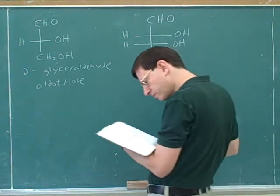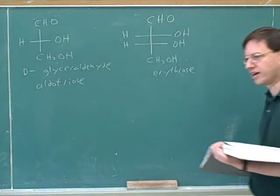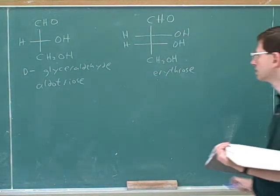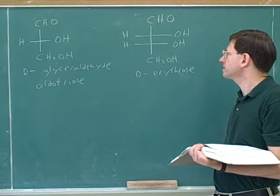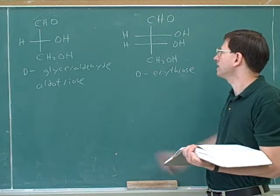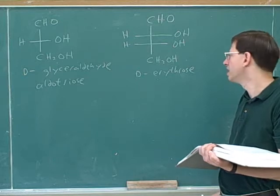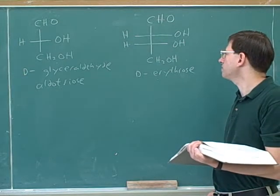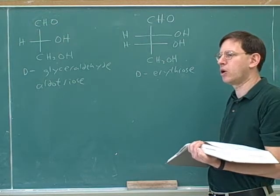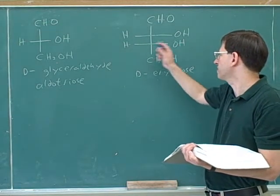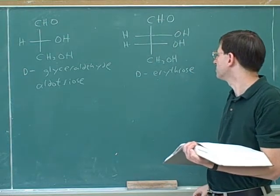This compound is called erythrose. The standard way to write these sugars is to put the carbonyl at the top of the Fischer projection. Whether it's D or L only depends on the bottom stereocenter. If the hydroxyl is pointing to the right at the bottom stereocenter when the carbonyl is on top, then it would be D.